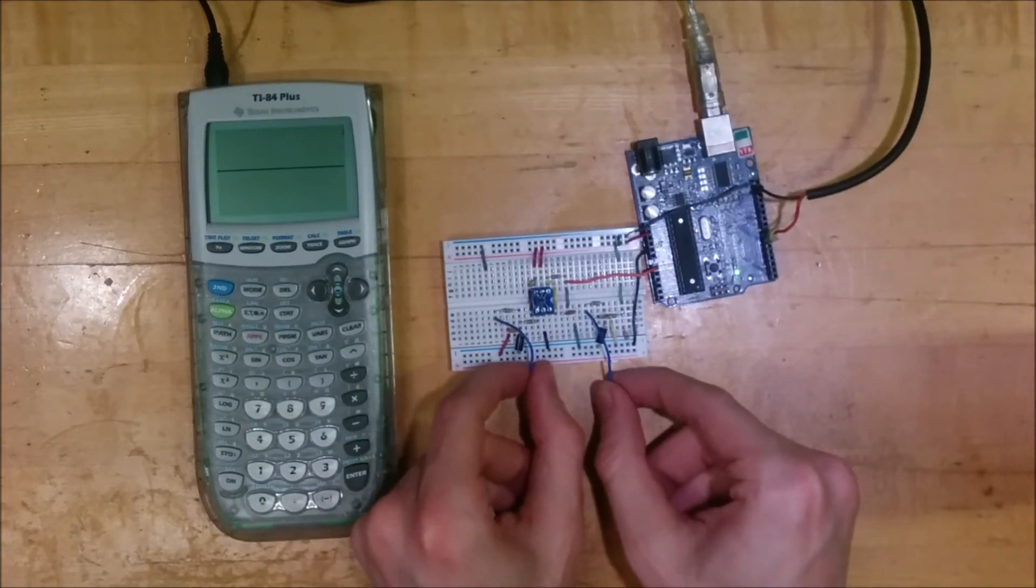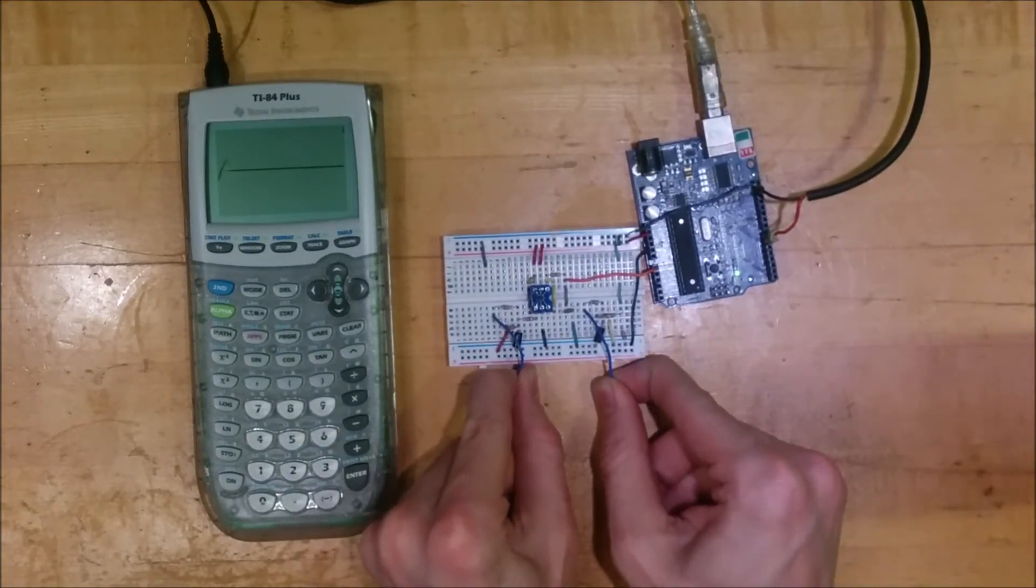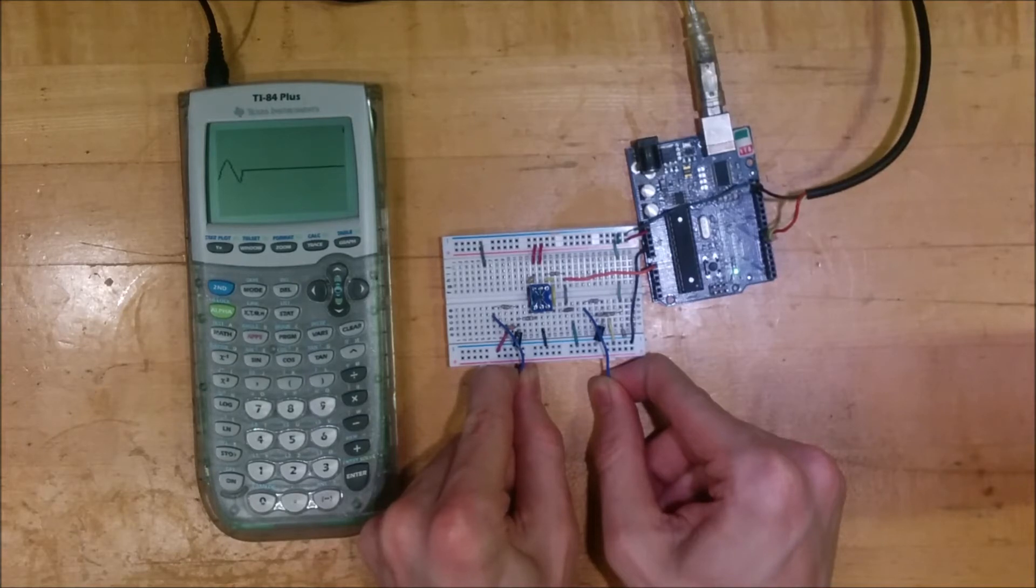If I grasp these two wires here, you'll see that a graph of my heart's electrical signals will appear on the screen of the calculator.